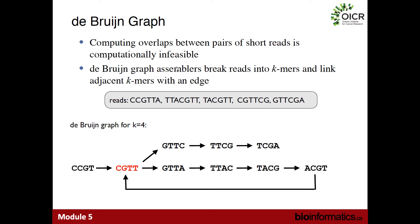The way a de Bruijn graph assembler works: you take your reads and pick a K-mer size — in this case K equals four. You slide this K-mer window over your read and add every K-mer you've seen into the graph as a vertex. So the first four base-pair substring C-C-G-T becomes a vertex, then C-G-T-T, then G-T-T-A, and so on until every distinct K-mer from the read set is a vertex in the graph. Then we make another pass over the reads and look for K-mers that are adjacent in a read, linking them with an edge. We end up with a structure where we can read off the genome sequence by following the path through the graph.